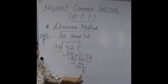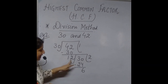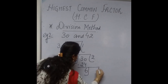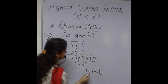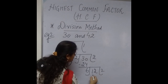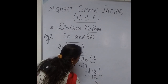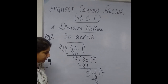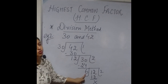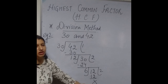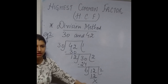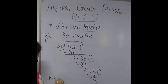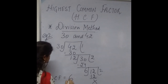We follow the same step again until the remainder becomes 0. Now 6 becomes the divisor and the earlier divisor 12 becomes the dividend. You can clearly see 6 times 2 is 12, and you are left with no remainder. As told earlier, the divisor through which the remainder is 0 becomes the HCF. Therefore, HCF of 30 and 42 is equal to 6.